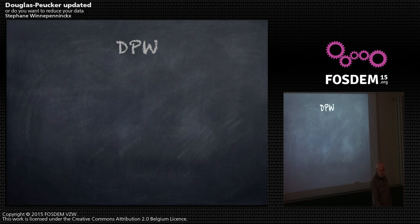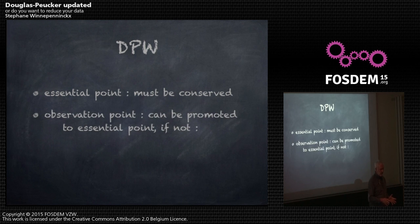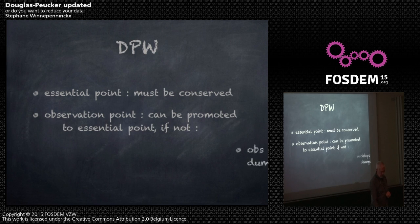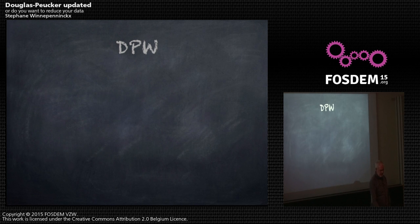So the Douglas-Peucker W — W is me — I have two types of points. The ones I want to keep I give the name of essential points, and all the other points are observation points. Observation points can be promoted to essential points. I don't create new points; I keep the essential ones and throw away the observation points. Observation points are doomed to be either promoted or dumped — that's the life of a point.